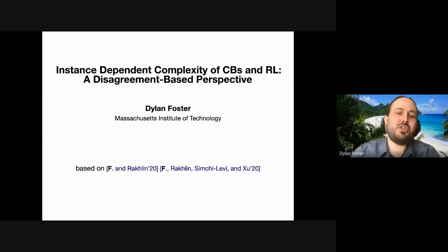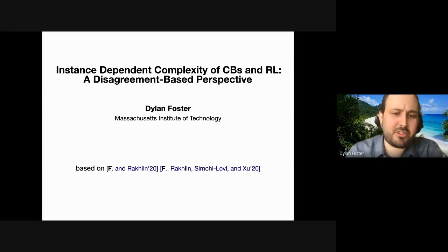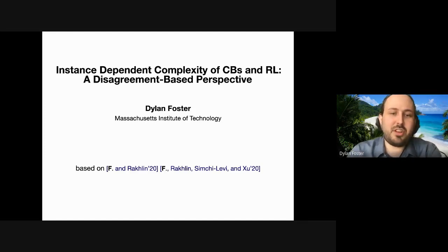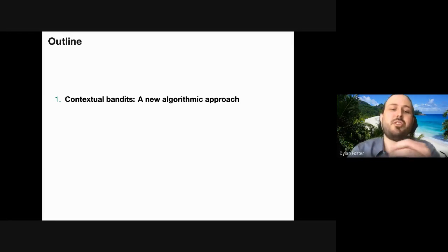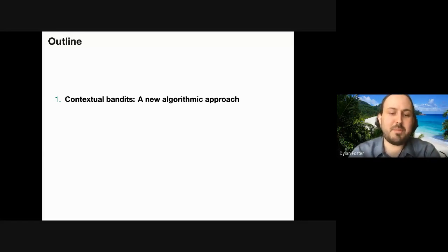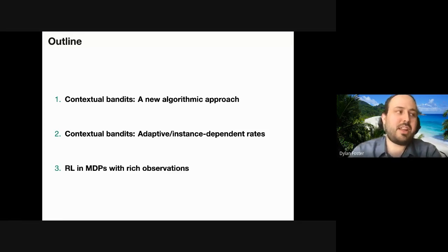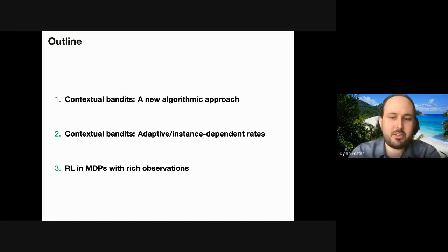Today I'm going to be talking about new algorithmic approaches for contextual bandits and reinforcement learning. This will be based on recent work with Sasha Rakhlin, and a follow-up with Sasha, David Simchi-Levi, and Yunzhang Xu, all at MIT. There's a lot to get through, so the game plan is: we'll introduce a new framework for designing contextual bandit algorithms leading to efficient algorithms with optimal minimax rates, then look at adaptive instance-dependent rates, and finally extend these developments to RL with high-dimensional rich observations and function approximation.